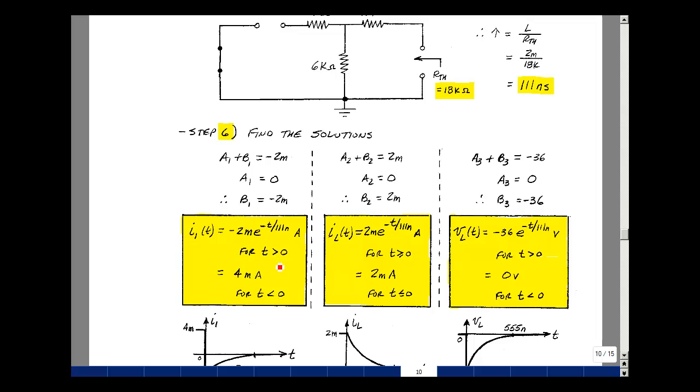This is true for T greater than 0. For T less than 0, we found that it was equal to 4 milliamps, and there's a discontinuity here. So that current did change instantaneously.